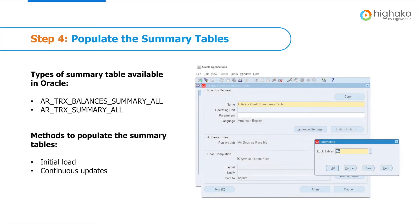The fourth step is to populate the summary tables. In Oracle, a summary table is used to store the latest financial information about the customers, enabling fast performance and processing efficiency. Oracle Credit Management populates two summary tables with Oracle Receivables data, such as the amount of open invoices and the percentage of invoices paid late. During credit reviews, the system examines the data in these pre-populated tables, thus saving processing time. The two summary tables are ARTRX Balances Summary All and ARTRX Summary All. The first one stores the current balances, including the amount of open invoices and open receivables, whereas the latter stores data including the count of open invoices and total invoice value, summarized for a specified period of time.